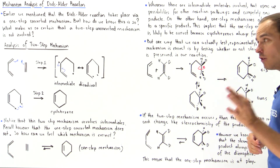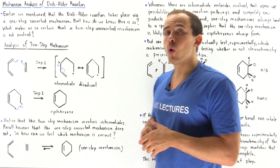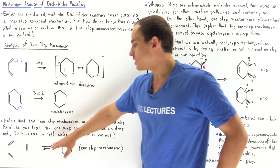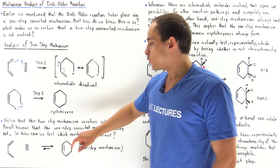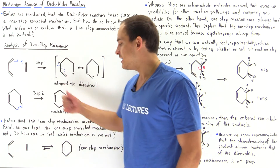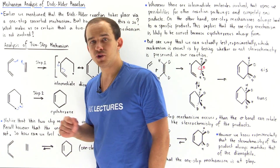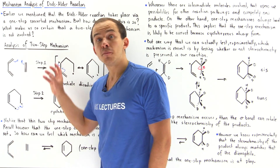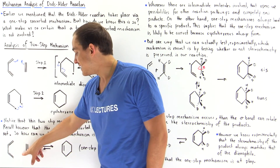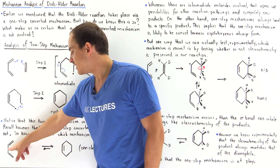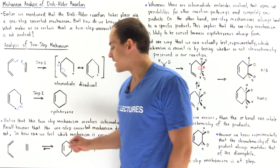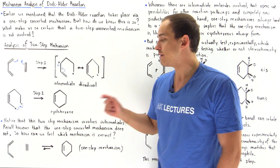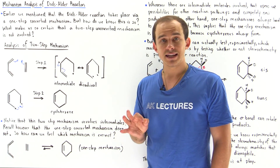Recall when we discussed our one-step concerted mechanism: our dienophile reacts with 1,3-butadiene, this full pi bond forms a single bond, and this also forms our single bond in a one-step mechanism, forming our cyclohexene.